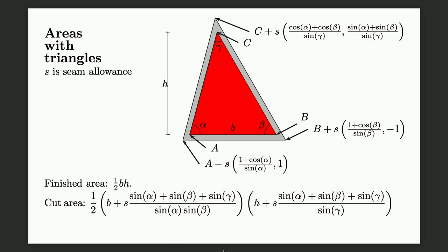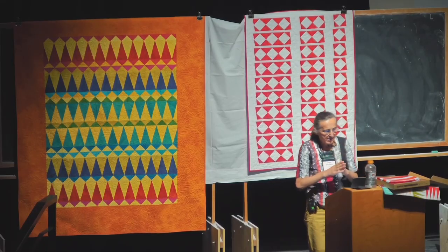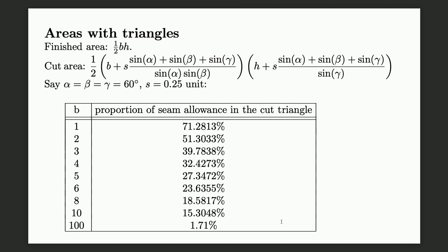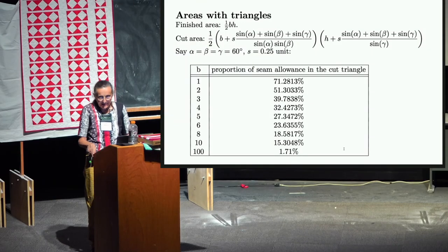Rectangles are easy. Let's move to triangles. You want a red triangle at the end with angles alpha, beta, and tip angle gamma, with a given base and height. The finished area is one-half base times height, and the cut area follows from the formula. For equilateral triangles with a quarter-unit seam allowance: if the final base is 1 inch, 71% of your cut area will not be seen — it will be seam allowance. Even for a 2-inch base, you will see less than 50% of what you cut.